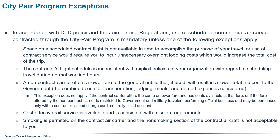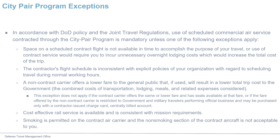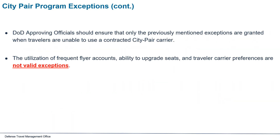The lower fare exception does not apply if the contract carrier offers the same or lower fare and has seats available at that fare, or if the fare offered by the non-contract carrier is restricted to government and military travelers performing official business and may be purchased only with a contractor-issued charge card or centrally billed account. Additional exceptions include: cost-effective rail service is available and consistent with mission requirements; or smoking is permitted on the contract air carrier and the non-smoking section is not acceptable to you. DoD approving officials should ensure only these exceptions are granted. Frequent flyer accounts, ability to upgrade seats, and traveler carrier preferences are not valid exceptions.